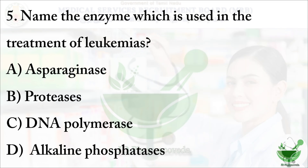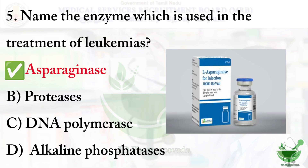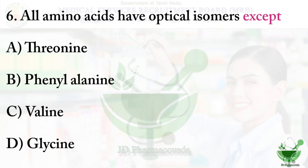Question number five: name the enzyme used in the treatment of leukemia. Leukemia is a type of cancer — specifically blood cancer. The options are: option A: asparaginase, option B: proteases, option C: DNA polymerase, option D: alkaline phosphatases. The correct answer is option A, asparaginase.